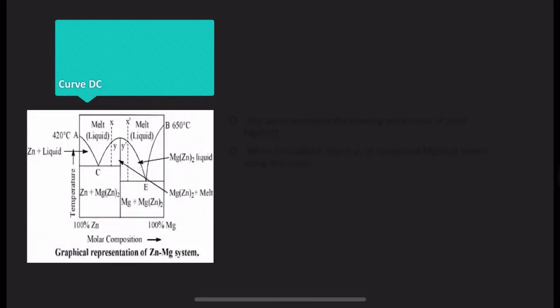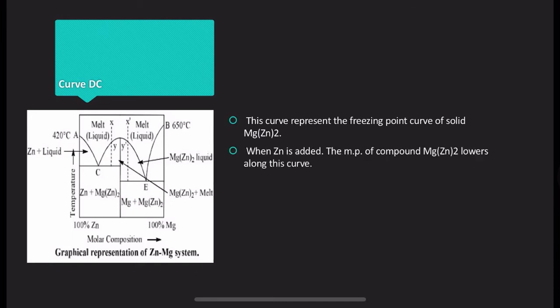Now, curve DC represents the solid form of MgZn₂ — the intermediate compound. When Zn is added, the melting point of the compound MgZn₂ is lowered along this curve. On the left side, pure Zn is present. When Mg is added, a chemical reaction occurs to form the intermediate MgZn₂. At point C, the compound MgZn₂ is present.